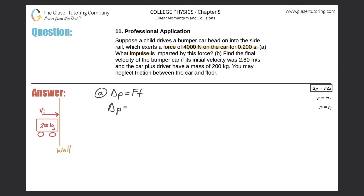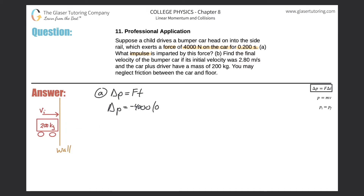So plug it in now. The force is negative 4,000 because it's pointing in the left-hand direction, and I took the velocity pointing to the right. If you frame the problem the other way — car traveling to the left — the initial velocity would have been negative and the force would point right; you'd still get the same answers, but you just have to be consistent. The time here was 0.2 seconds. This gives us negative 800 kilogram meters per second, and that would be the impulse, a.k.a. the change in momentum. That takes care of letter A.